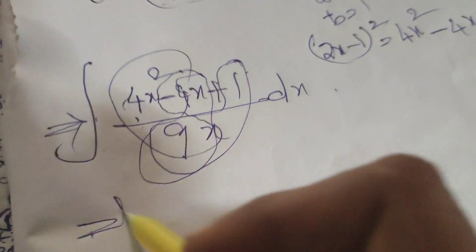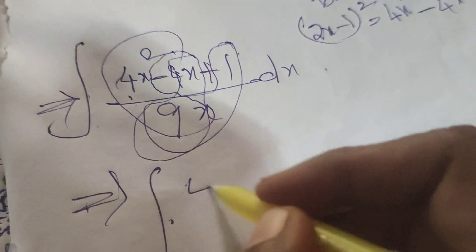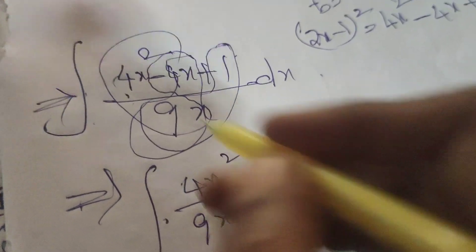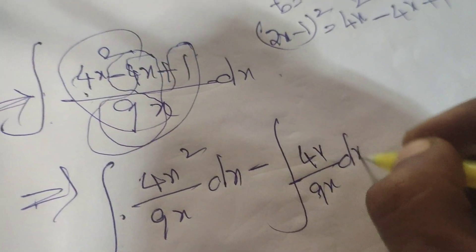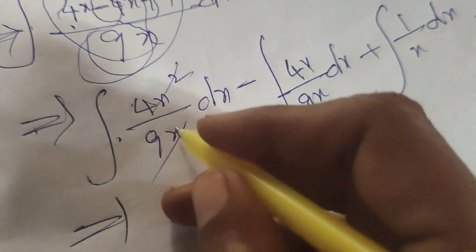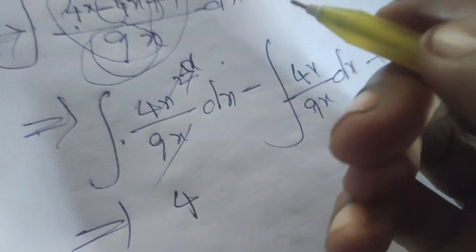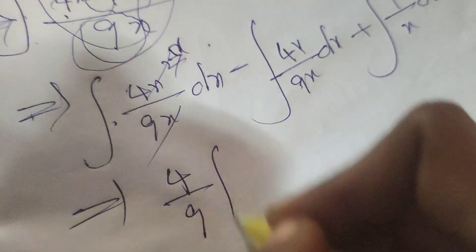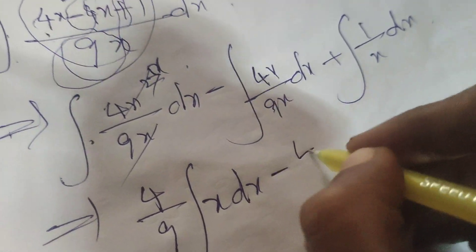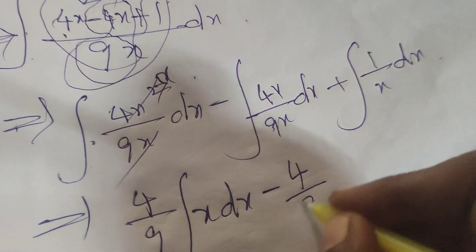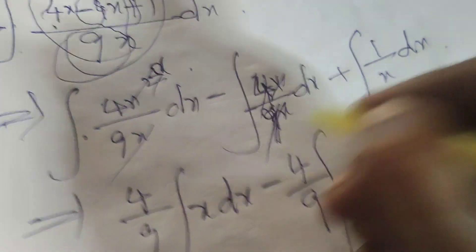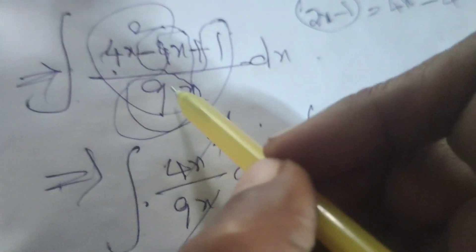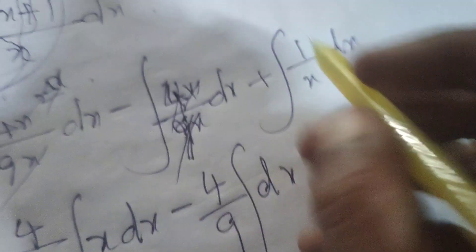Separate the numerator one by one over the denominator: integral of 4x squared by 9x dx, minus integral of 4x by 9x dx, plus integral of 1 by 9x dx. Here x gets cancelled in the first two terms, leaving 4x by 9 and 4 by 9 as constants.